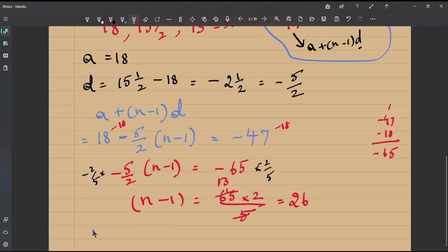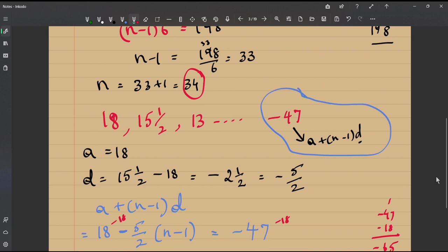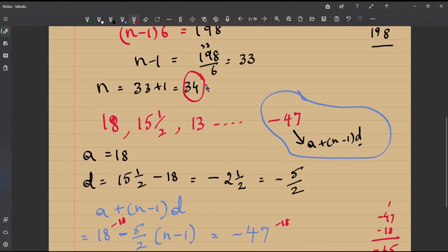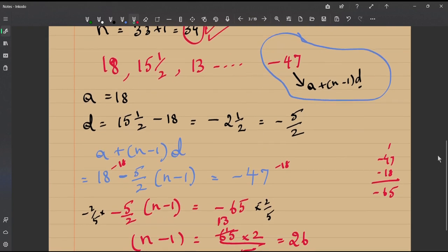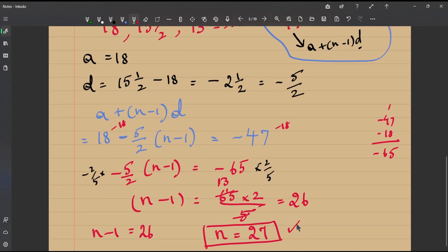So your n minus 1 is 26, so the number of terms in this arithmetic progression is n equal to 26 plus 1 which is 27. So there are 27 terms in the second arithmetic progression. You have two answers now for each of the arithmetic progressions, the first one was 34 and the second one the number of terms 27.